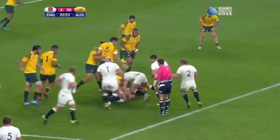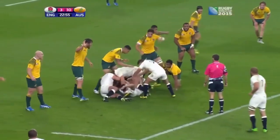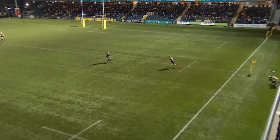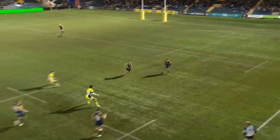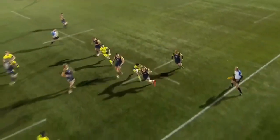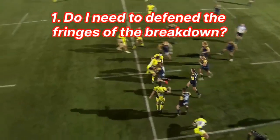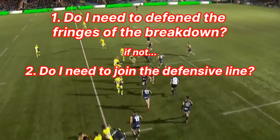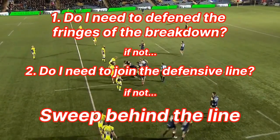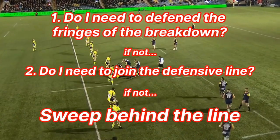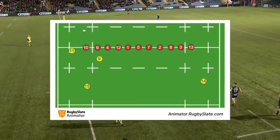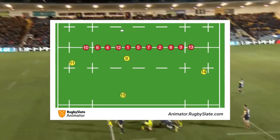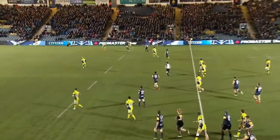Defensive positioning for a scrum half is very difficult to coach, as it's extremely dependent on the situation being faced. The core principle is to follow, in order of importance, something like this. Firstly, do I need to defend the fringes of the breakdown? If not, do I need to join the defensive line to plug any holes? And if not, then I should fall into the typical position, which will be about 5-10 metres behind the defensive line following the ball across the field. In reality, it can end up being far more complicated than that.